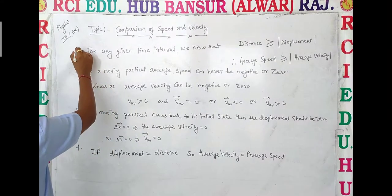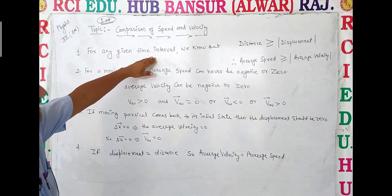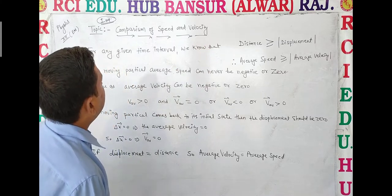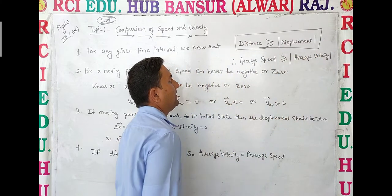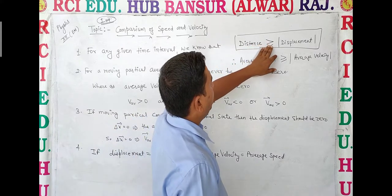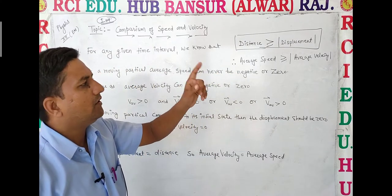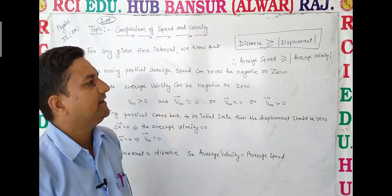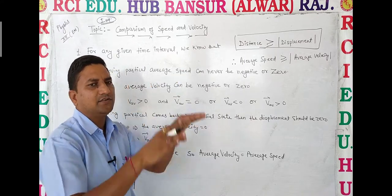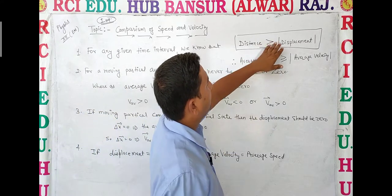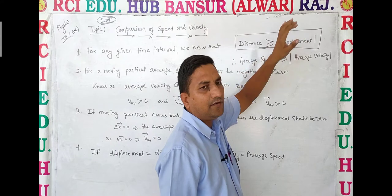This is the first important point. For any given time interval, distance is greater than or equal to the magnitude of displacement. Distance is always positive, while displacement can be positive, negative, or zero. Distance and displacement are equal only when motion is in a straight line.